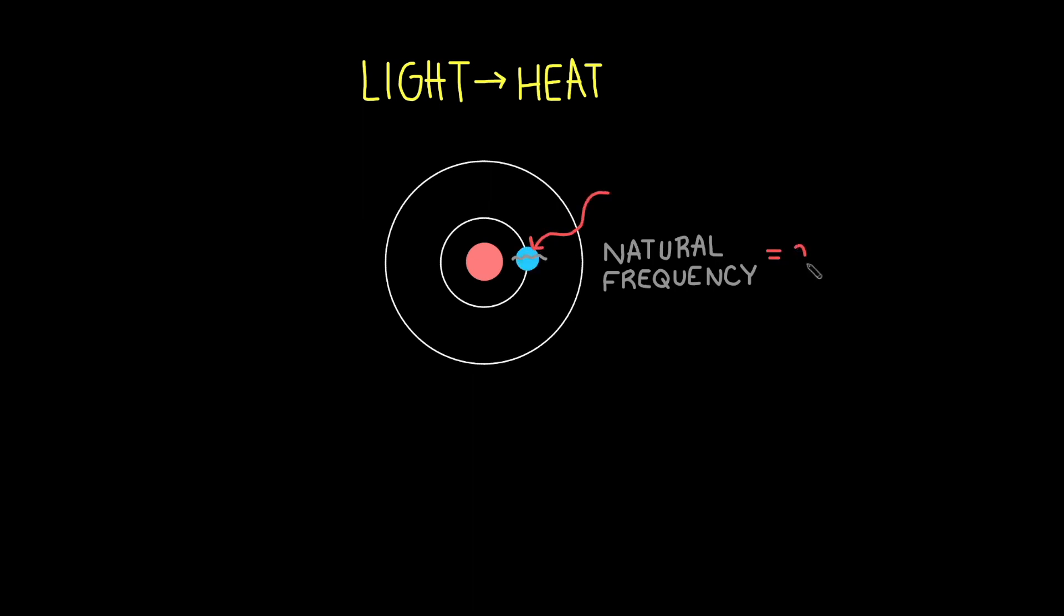When the frequency of a light wave does not match the natural frequency of the electrons, reflection or transmission will occur instead. If the object is transparent, the light will be transmitted and the vibrations of the electrons will be passed along to neighboring atoms. If it is opaque, the light will be reflected—the electrons will vibrate briefly and then re-emit a light wave.